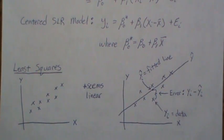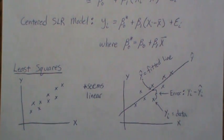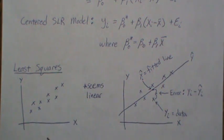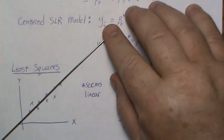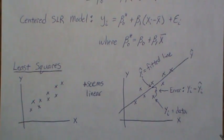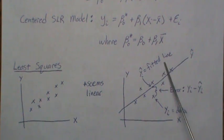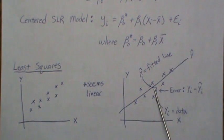Now we develop criteria to find the best line. Given a scatter of x-y data that looks roughly linear, we could draw many candidate lines — so how do we find the best one? We'll develop the least squares criterion. Any candidate fitted line y-hat generates residuals: the difference between the observed y and what the line predicts.